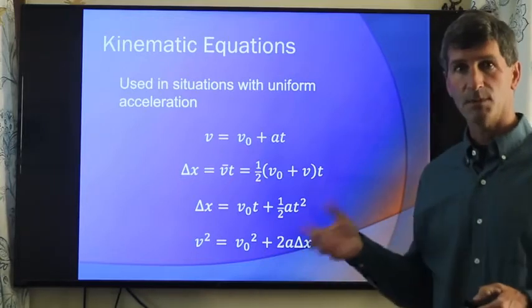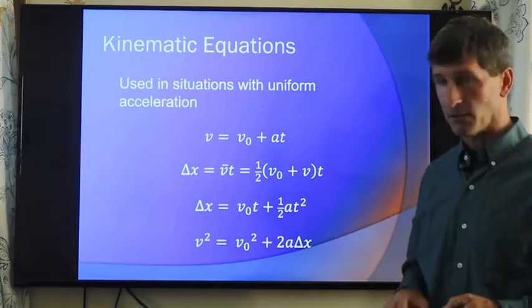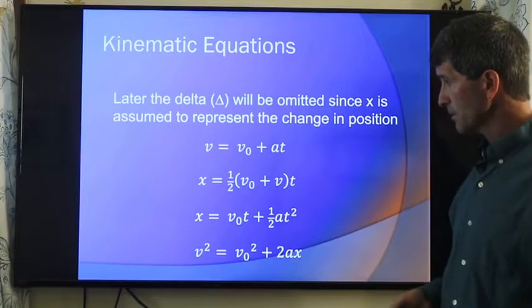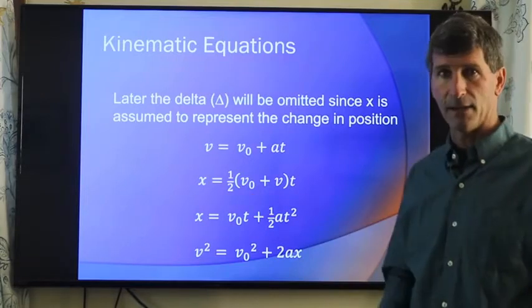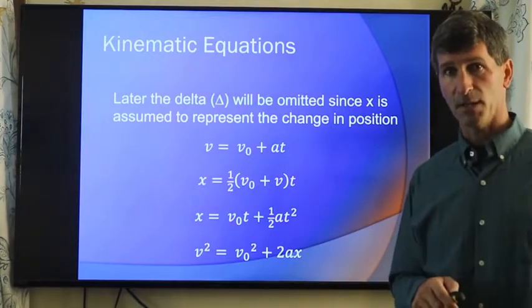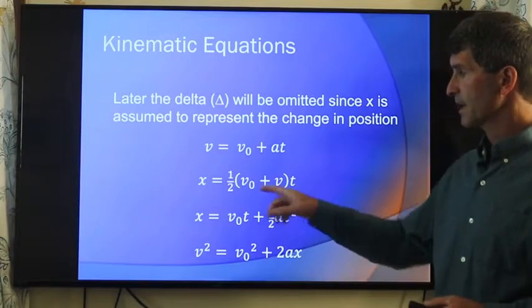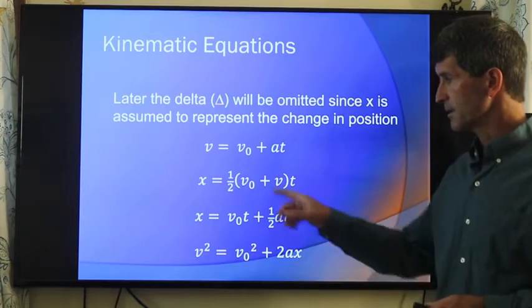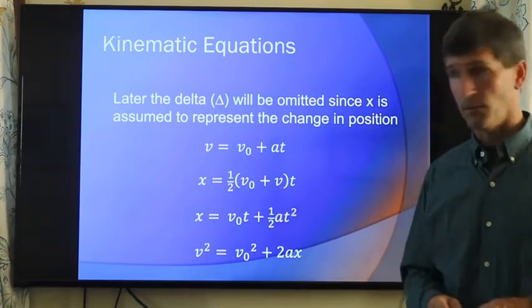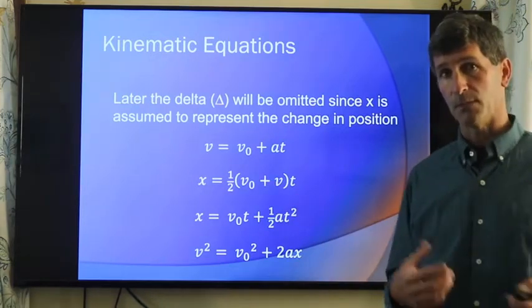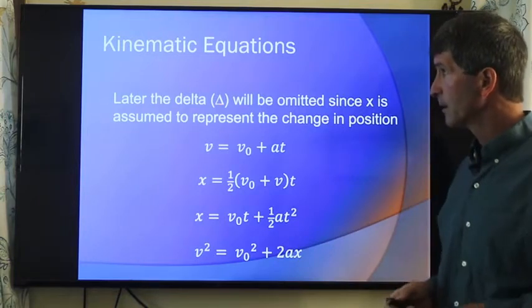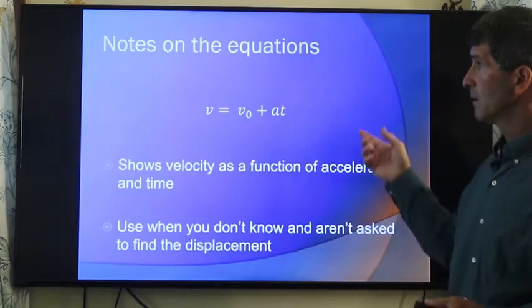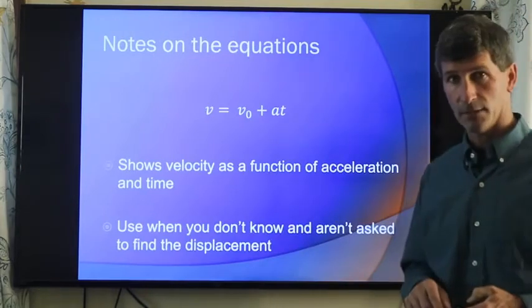Often times we get rid of the deltas. It's just an easier way to write this out. But x still means our displacement. Also, sometimes you'll see this written as vᵢ and vf. But for our purposes, we're going to use v₀ from now on. And for final velocity, we'll just forget the subscript. Again, if you want to see where these equations came from, such as this equation right here, the first one, you can imagine a graph.